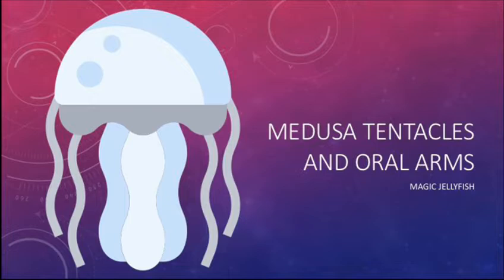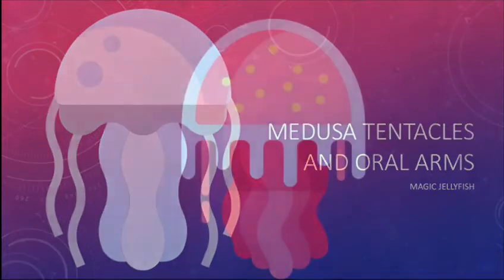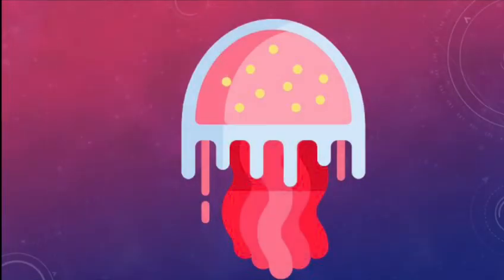Usually Medusa tentacles are straight and unbranched. In some unusual cases, they are sparsely branched. The tentacles are generally hollow and muscular.